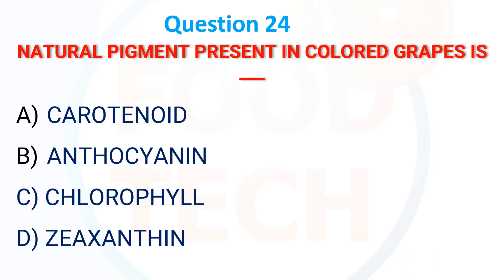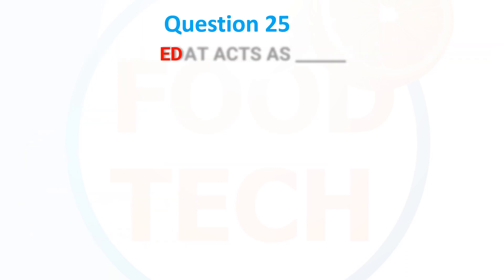Natural pigment present in colored grapes is: A) Carotenoid, B) Anthocyanin, C) Chlorophyll, D) Genethanin. The answer is B) Anthocyanin.